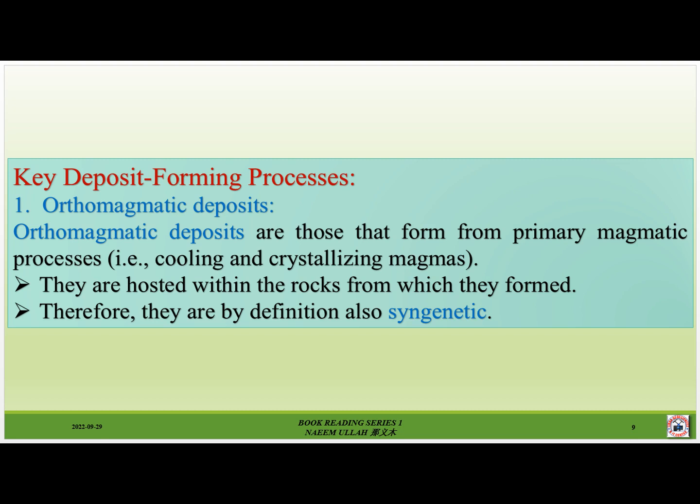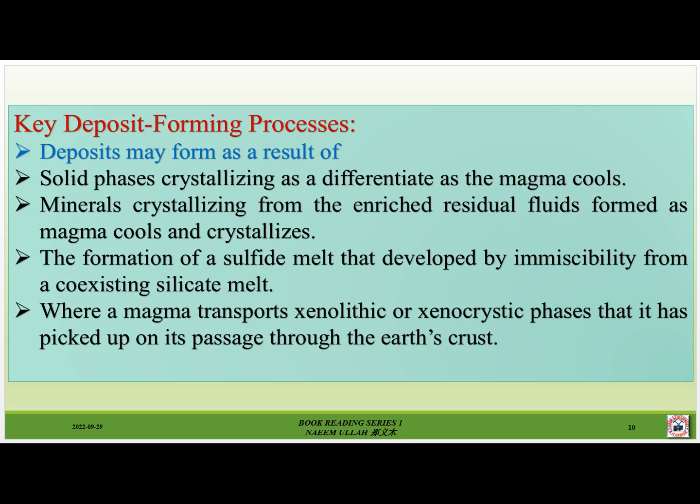Key deposit-forming processes. Number one: orthomagmatic deposits are those that form from primary magmatic processes, that is, cooling and crystallizing magmas. They are hosted within the rocks from which they formed; therefore they are by definition also syngenetic. Deposits may form as a result of solid phases crystallizing as a differentiate as the magma cools, minerals crystallizing from enriched residual fluids, or the formation of sulfide melt developed by immiscibility from a coexisting silicate melt.